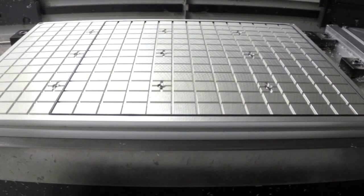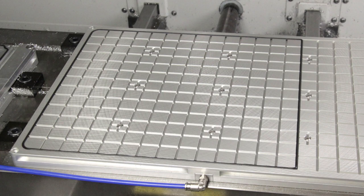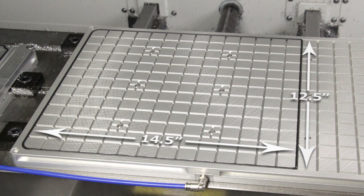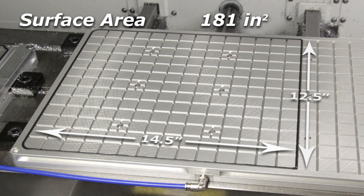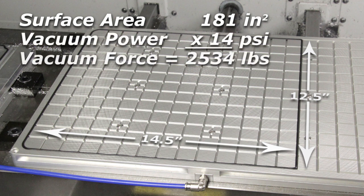Now let's figure out our vacuum force. The vacuum area we've created is 12 and a half by 14 and a half. Those multiplied together gives us a surface area of 181 square inches. Multiply that by 14 and we get a vacuum force of 2,534 pounds, plenty for this application.